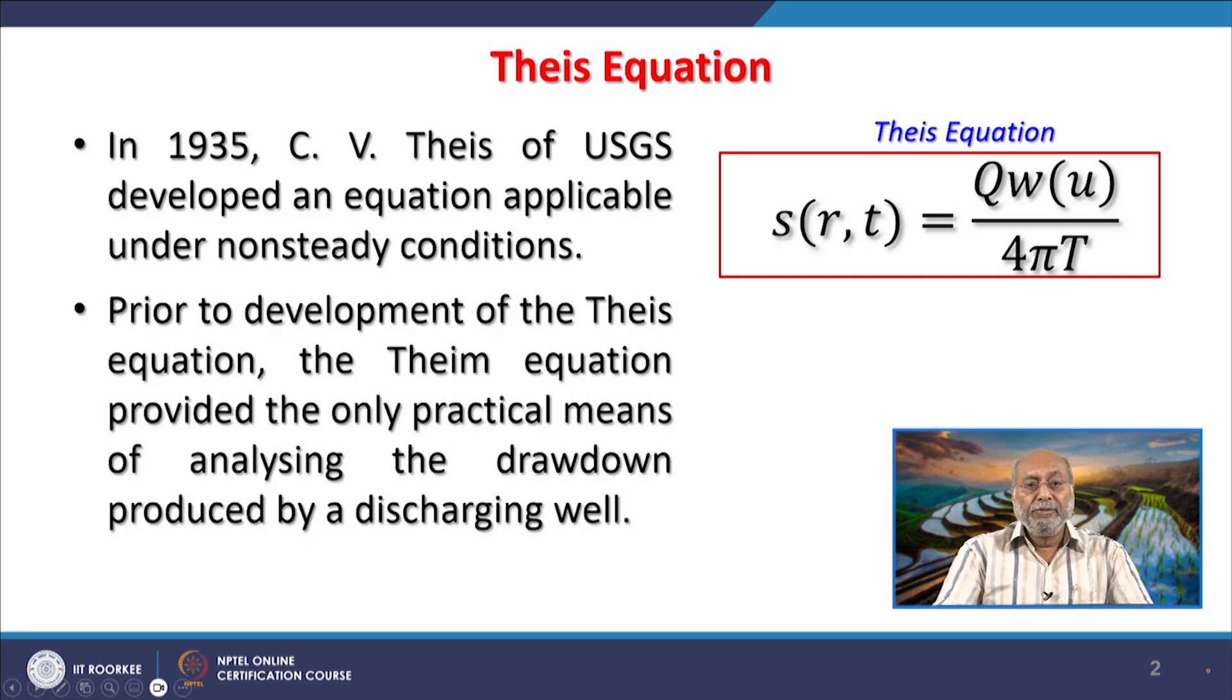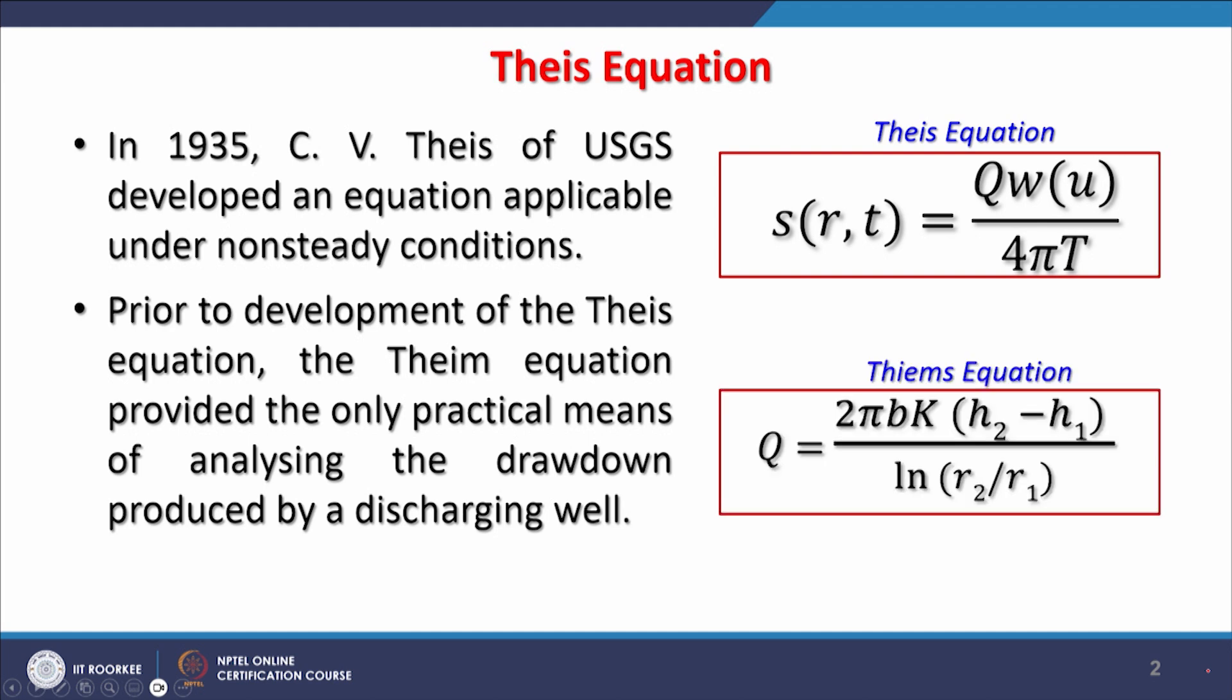And prior to this development of Theis equation, the Thiem equation was providing practical means of analyzing drawdown produced by discharging well. The Thiem equation can be written as Q = 2πDK(h₂-h₁)/ln(r₂/r₁), where b is the thickness, k is the hydraulic conductivity, and h₂ minus h₁ is the height difference between two observing wells.